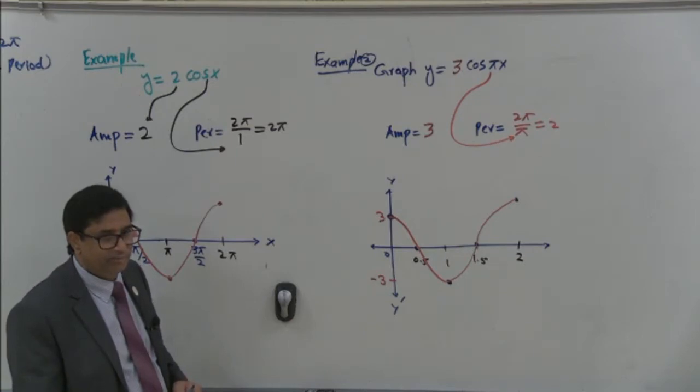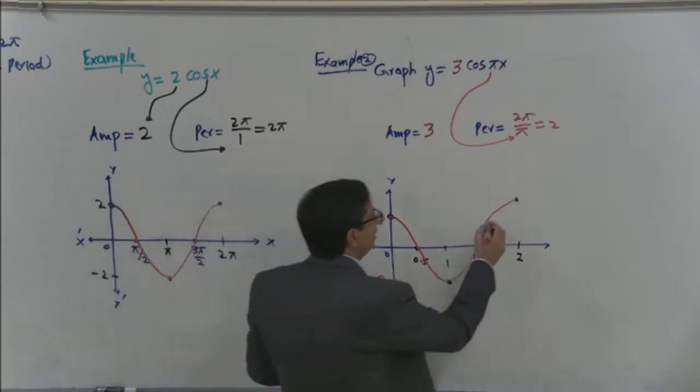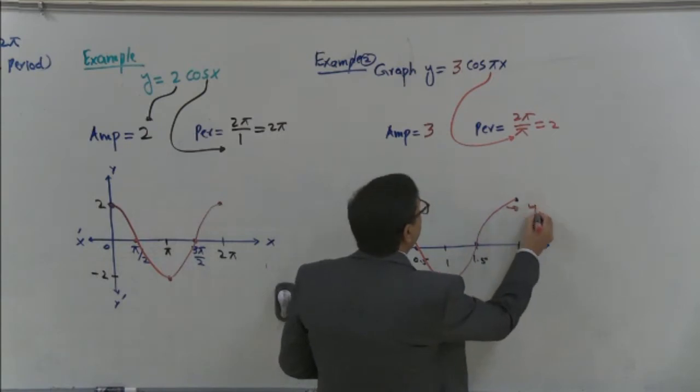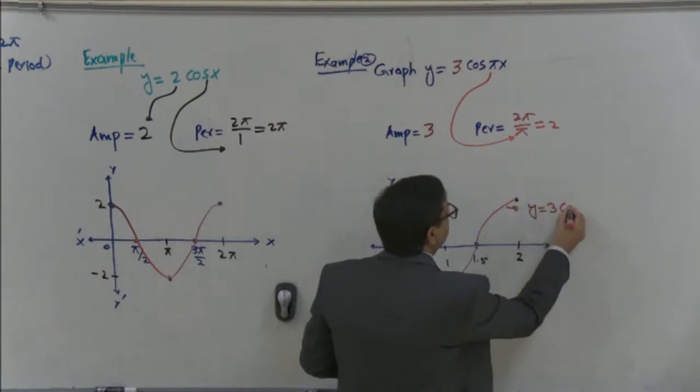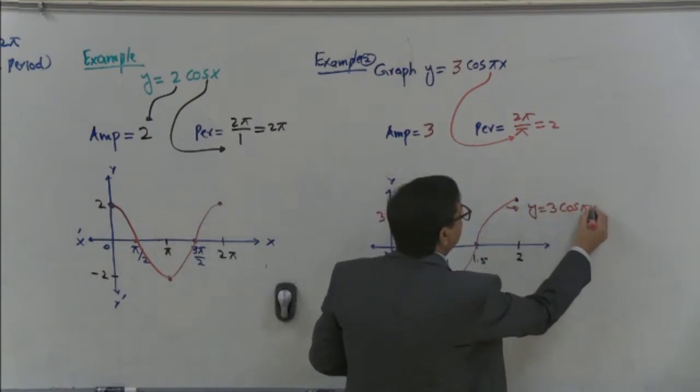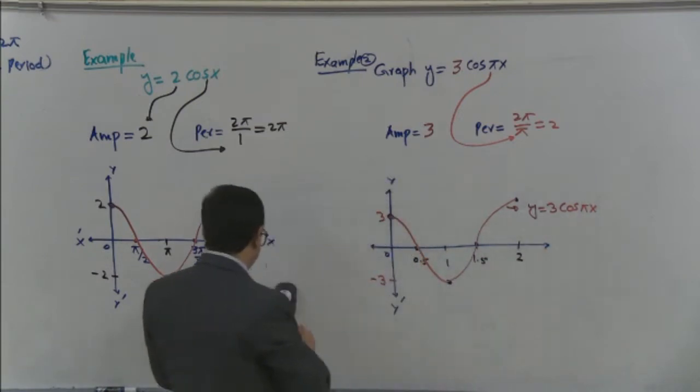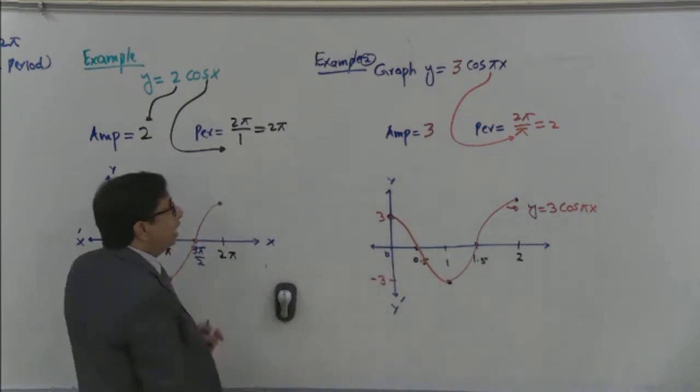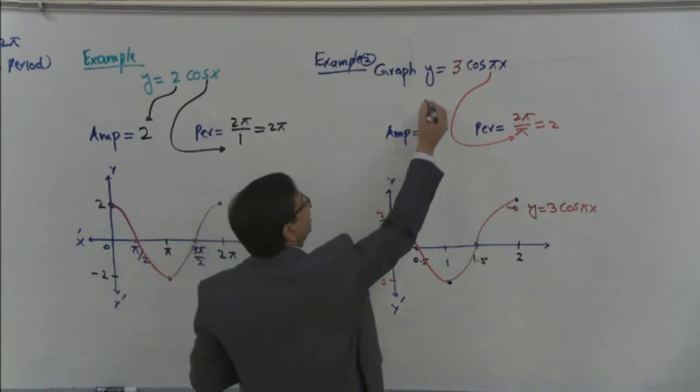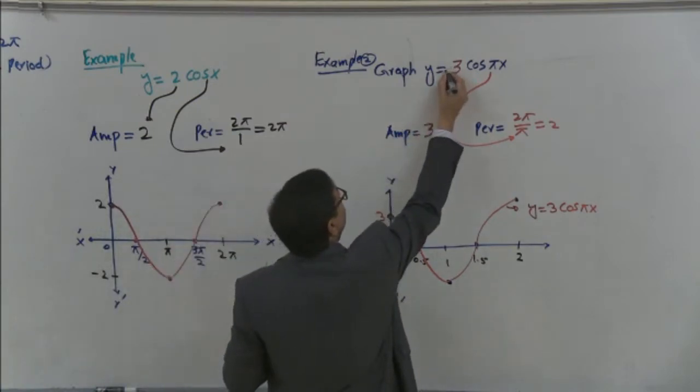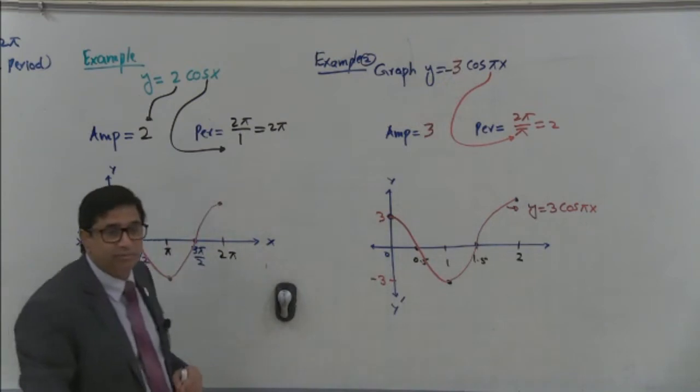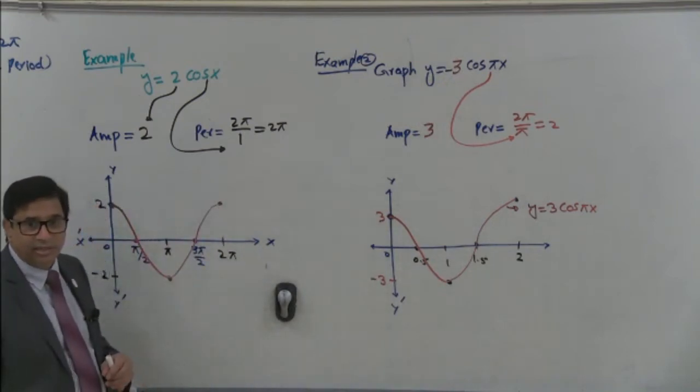This is for one complete failure of the given function y equal to 3 cosine 5x. Any question? Okay. Label it. Y is equal to 3 cosine of 5x. Now, I make a small change over here in the same graph. If it is, there is given minus sign before. Okay. Minus sign.